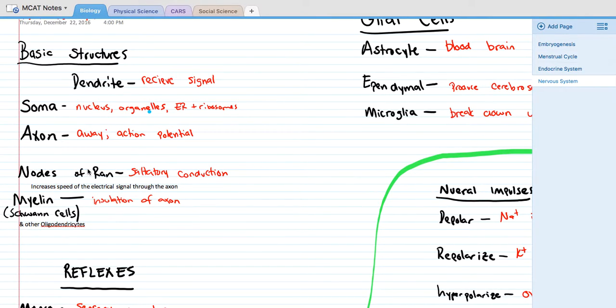You also have nodes of Ranvier. The way this works is that you will have little humps. This is called saltatory conduction, where the electrical signal is able to jump through the nodes of Ranvier and produce an action potential a lot quicker than if there were no nodes of Ranvier.